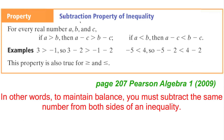Here we have our second property: the Subtraction Property of Inequality. For every real number a, b, and c, if a is greater than b, then a minus c is going to be greater than b minus c. This means if we subtract the same number from both sides of the inequality, the inequality remains true. This also applies to less than symbols, and is true for greater than or equal to and less than or equal to as well.